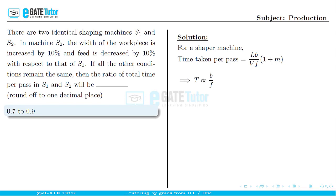So from the question, for machine S1, the width b1 remains b and the feed f1 remains f. Whereas for machine S2, the width is increased by 10%, so b2 becomes 1.1b, and feed is decreased by 10%, so f2 becomes 0.9f.